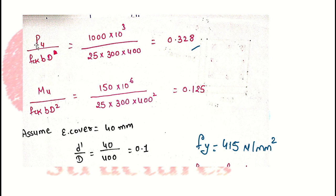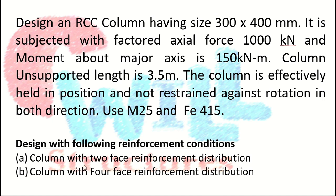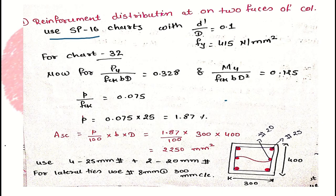Computing the chart axes: P_u / (f_ck × b × d) = 0.328 and M_u / (f_ck × b × d²) = 0.125. The other required values are d'/d = 0.1 (assuming effective cover of 40 mm) and f_y = 415 N/mm². Now we calculate reinforcement for two cases: Case 1 — reinforcement distributed on two faces, and Case 2 — reinforcement distributed on four faces.